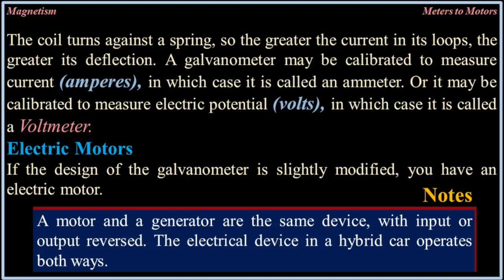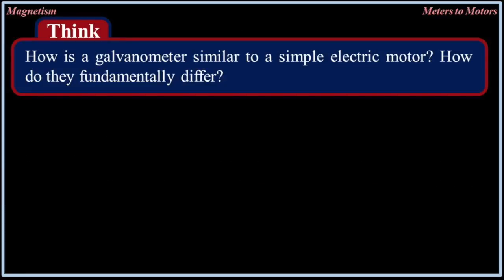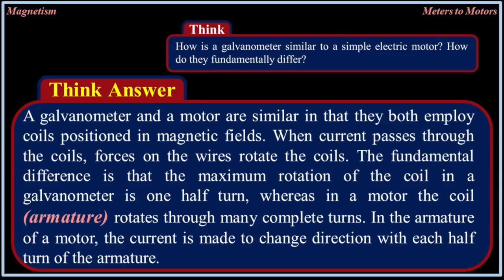If the design of the galvanometer is slightly modified, you have an electric motor. A motor and generator are the same device with input or output reversed. A galvanometer and a motor are similar in that they both employ coils positioned in magnetic fields; when current passes through the coils, forces on the wires rotate the coils. The fundamental difference is that the maximum rotation of the coils in a galvanometer is one half turn, whereas in a motor the coil armature rotates through many complete turns.